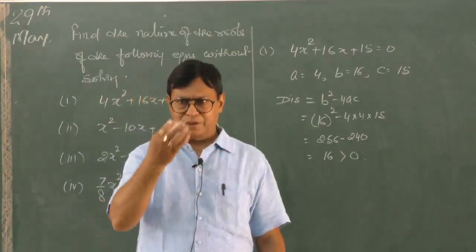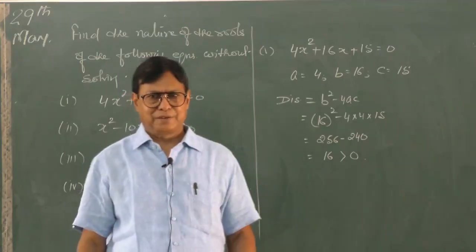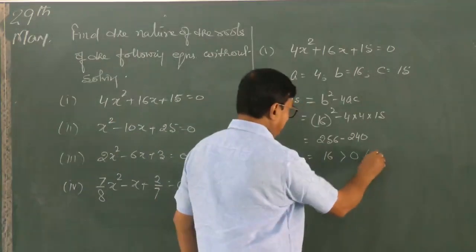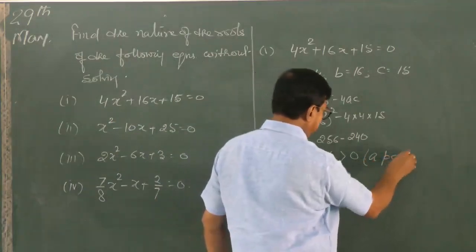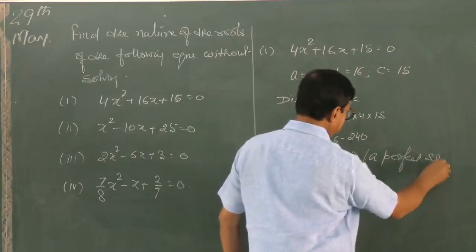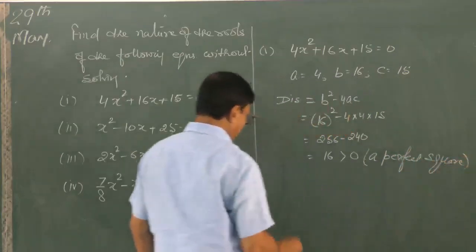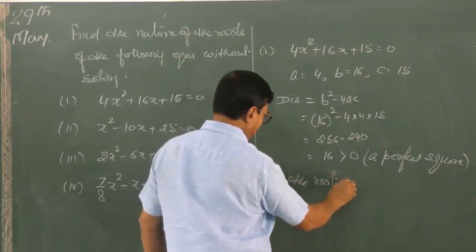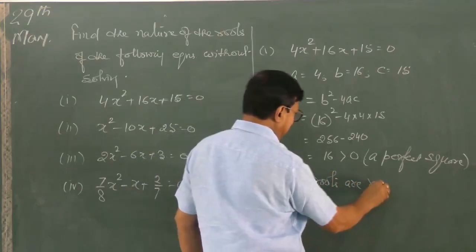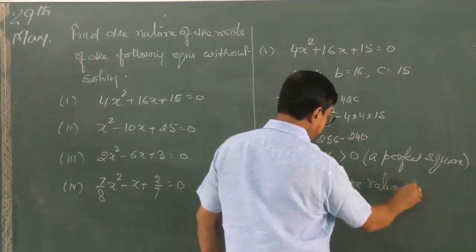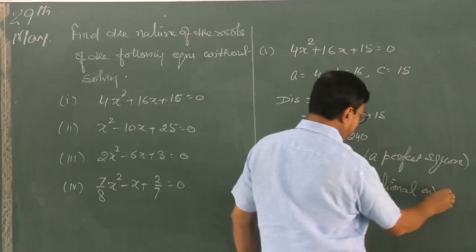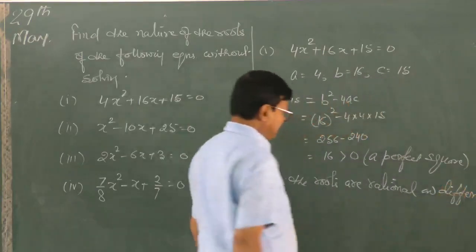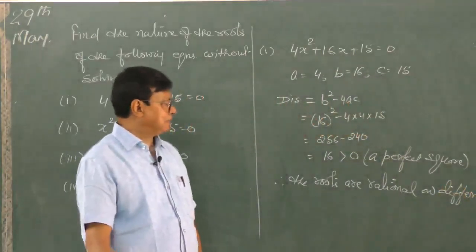Now go one step further — is 16 a perfect square? Well, 16 is 4 squared, so this is a perfect square. Therefore the roots are rational and different.